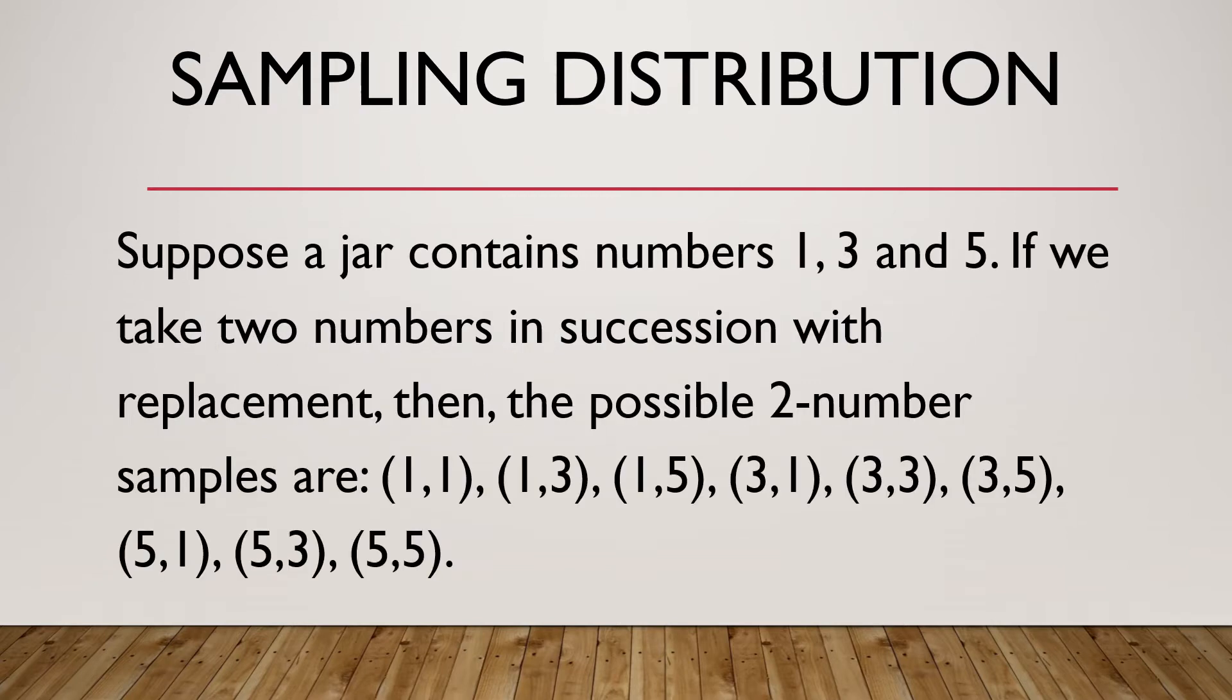To give you an example, suppose a jar contains numbers 1, 3, and 5. If we take two numbers in succession with replacement, then the possible two-number samples are: (1,1), (1,3), (1,5), (3,1), (3,3), (3,5), (5,1), (5,3), and (5,5).